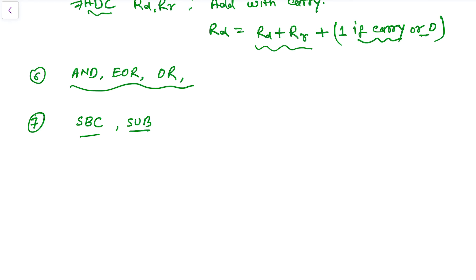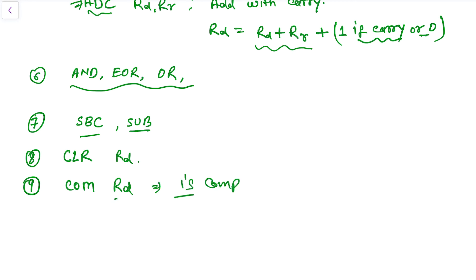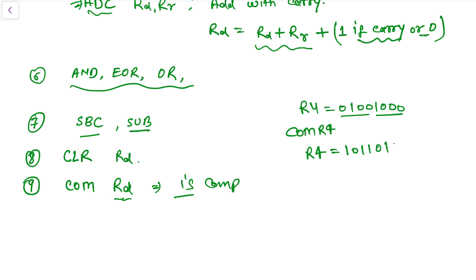Apart from those, there are a few more instruction sets. CLR Rd clears the register Rd. COM Rd performs the one's complement of the register. For example, if R4 is 0b01001010 0, after COM R4 the register will become 0b10110111 — it simply complements all the bits.